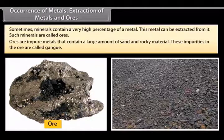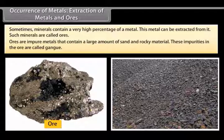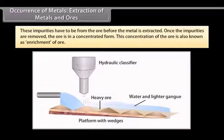Ores are impure metals that contain a large amount of sand and rocky material. These impurities in the ore are called gangue. These impurities have to be removed from the ore before the metal is extracted. Once the impurities are removed, the ore is in a concentrated form. This concentration of the ore is also known as enrichment of ore.